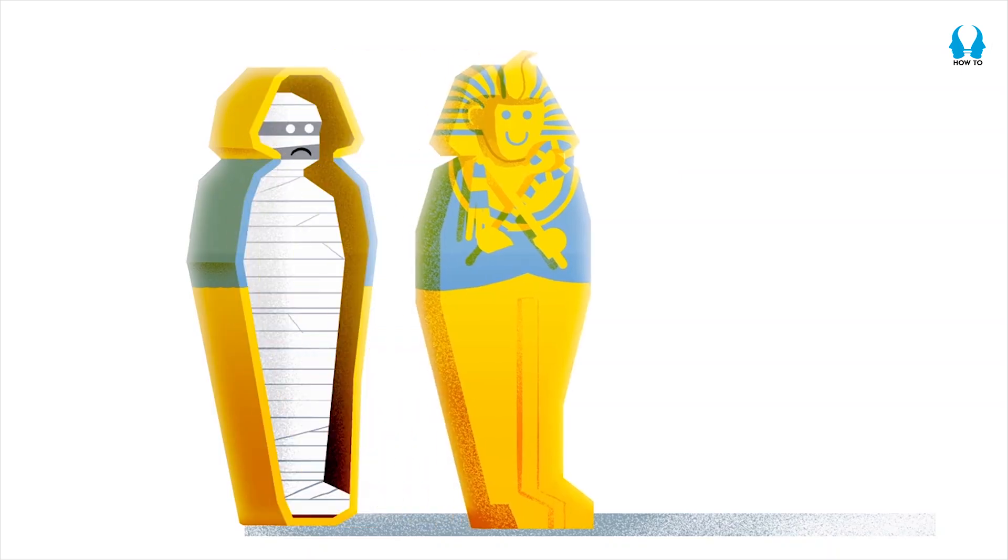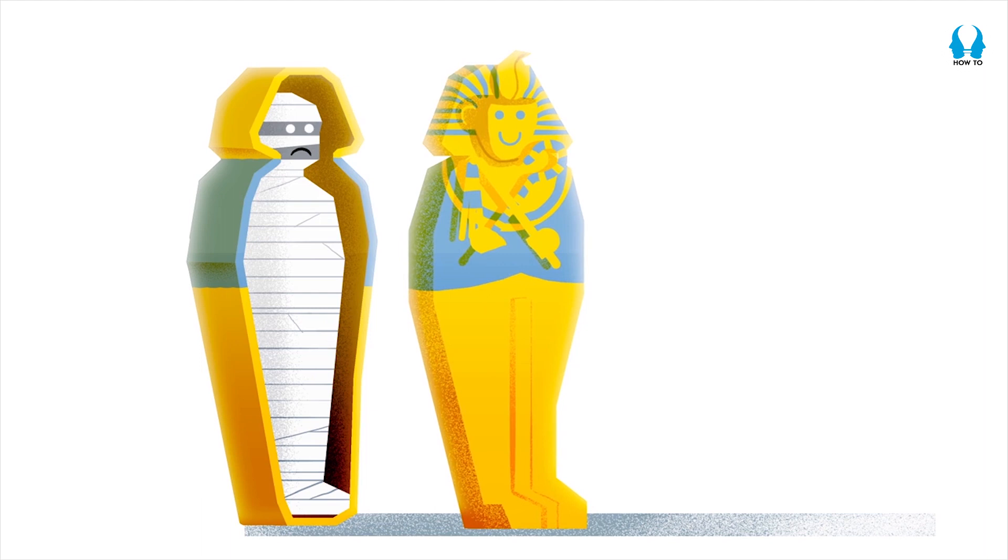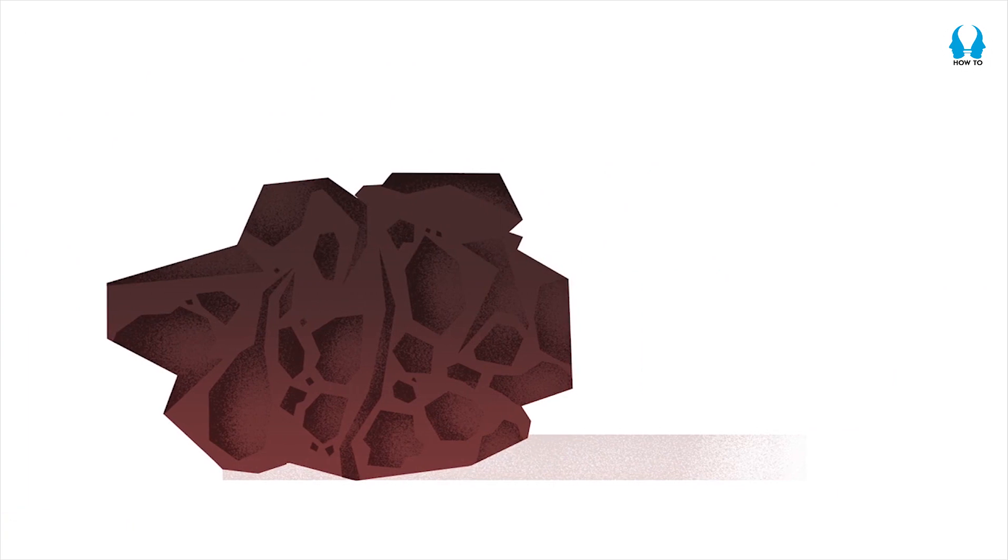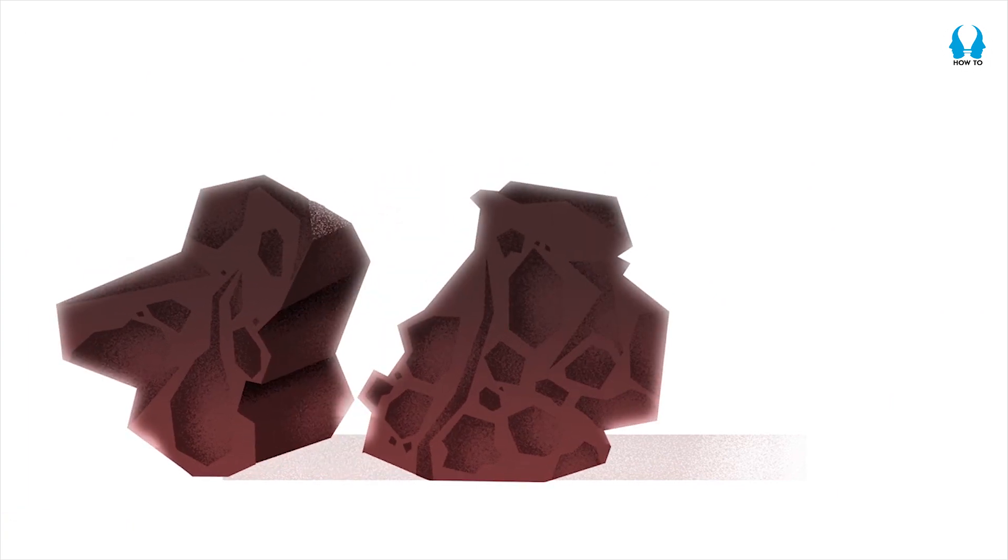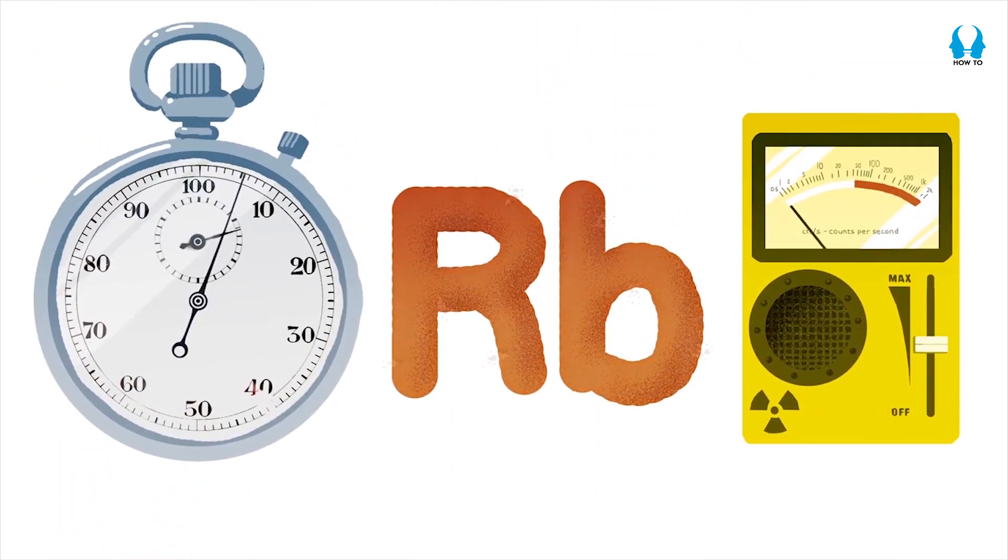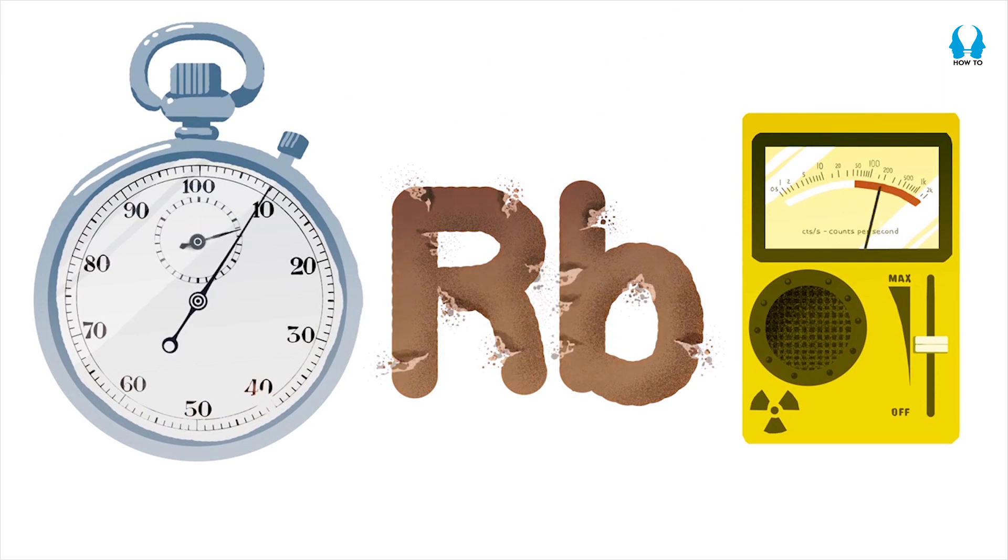If we wanted to find out the age of an ancient Egyptian mummy, we could use a technique called carbon dating. However, meteorites don't contain life as far as we know. But we could use another method to determine their age, rubidium dating. We can study the decay of the element rubidium and find out their age.